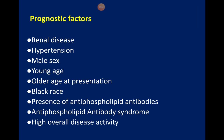Bad prognostic factors include renal disease, hypertension, male gender, and younger age — younger patients will live with SLE throughout their life, meaning longer exposure to inflammatory processes. Older age at presentation also tends to be associated with higher severity. Additional poor prognostic factors include black race and the presence of comorbid disease, including antiphospholipid antibodies.